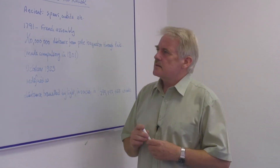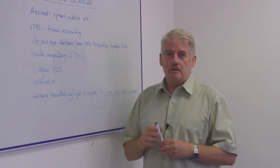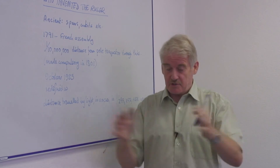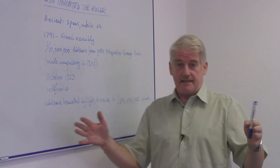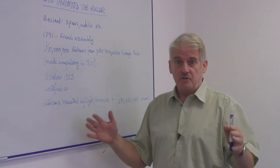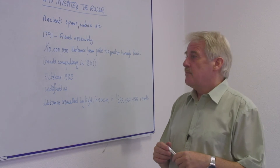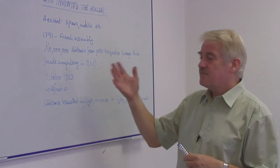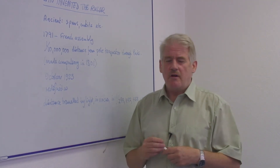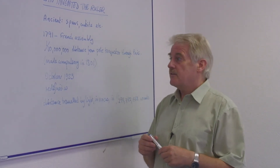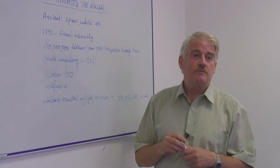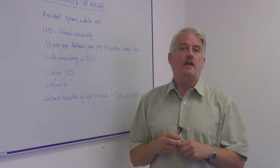This measure continued — there was a standard meter kept in a very special place in Paris for 200 years. But it wasn't very practical, so eventually they redefined it in terms of the wavelength of light.